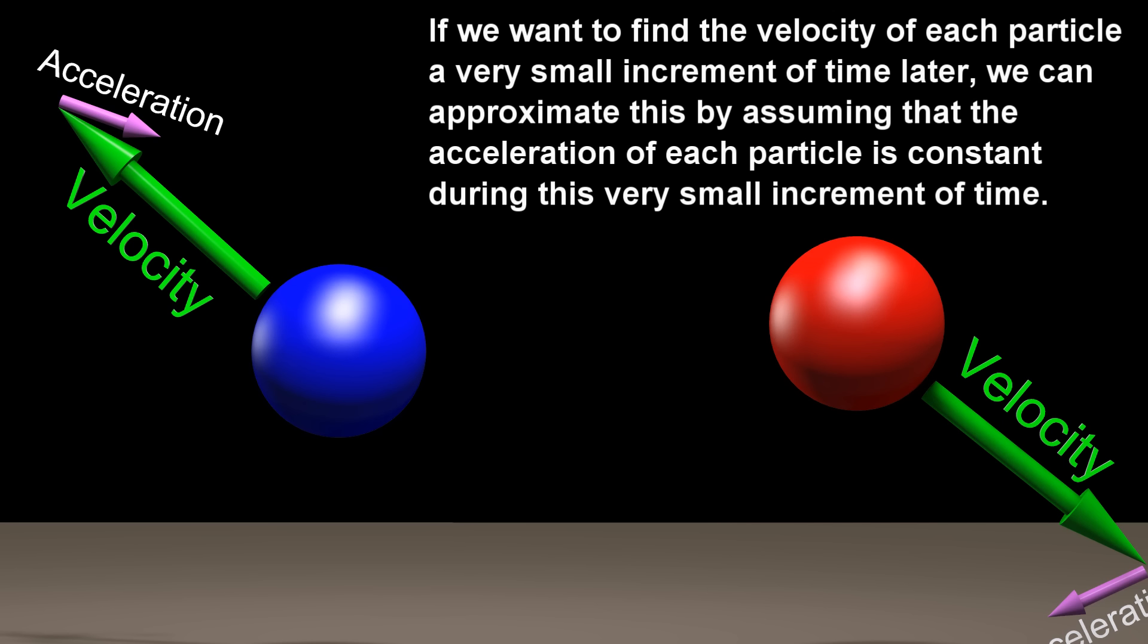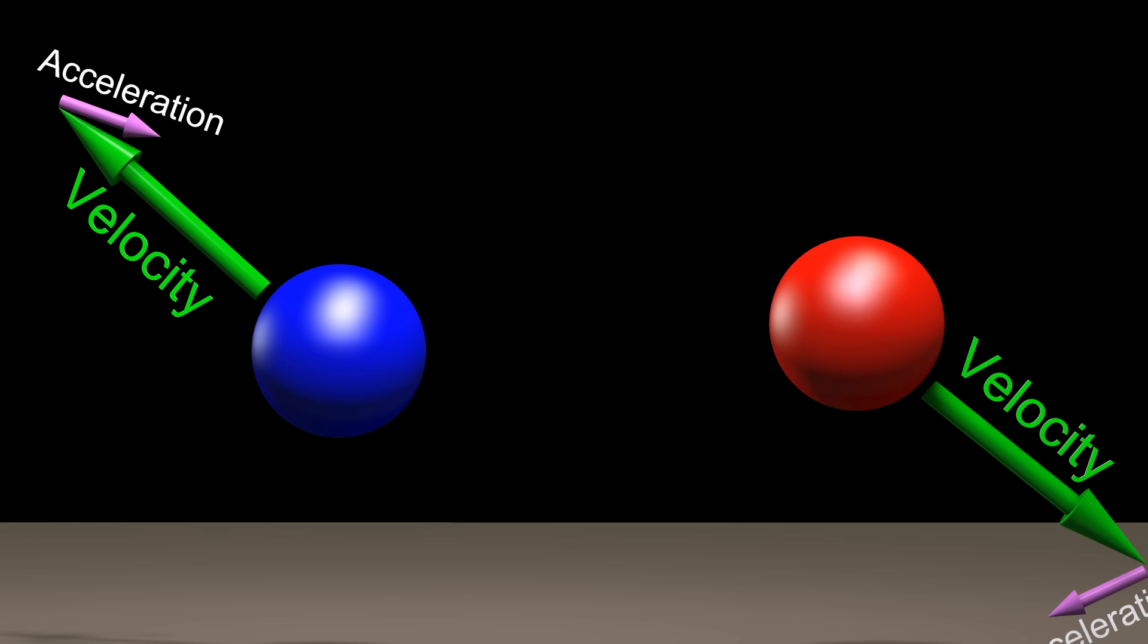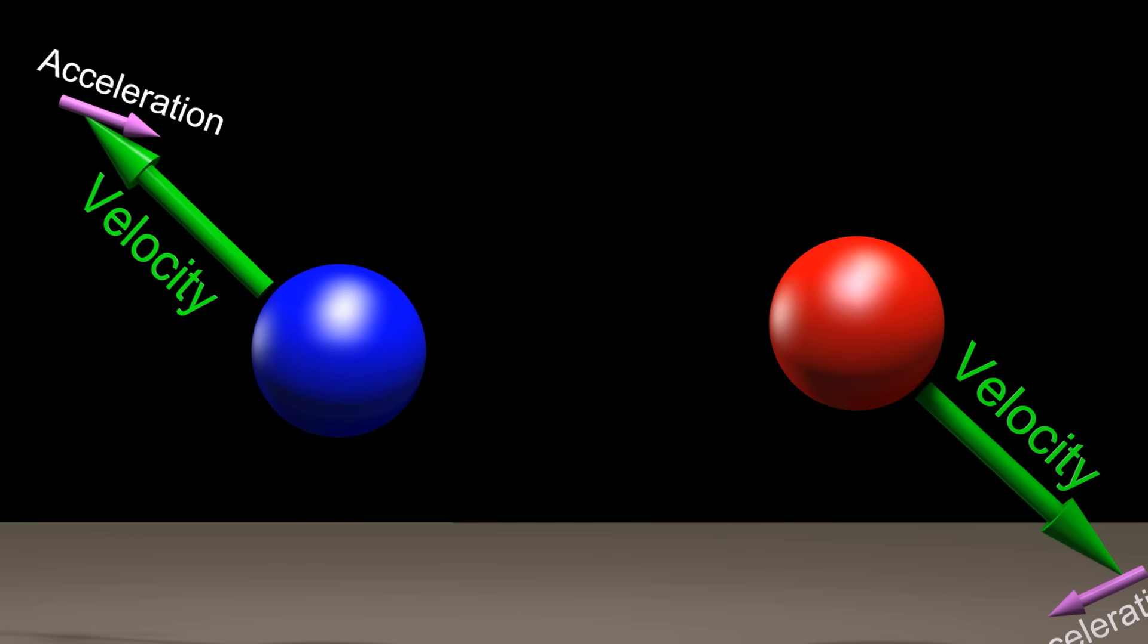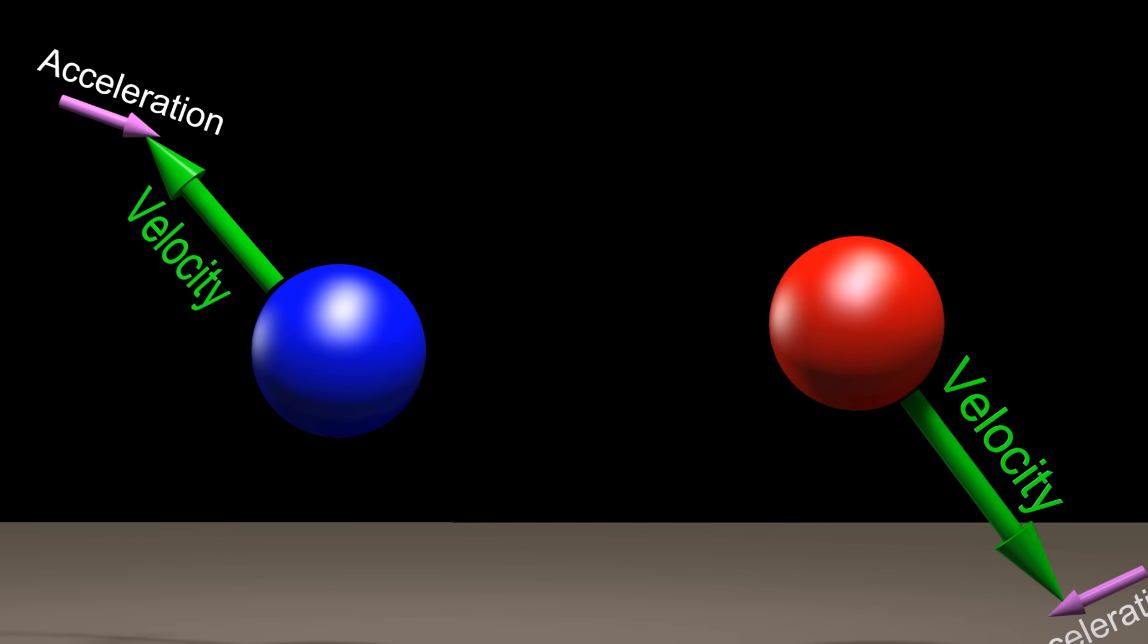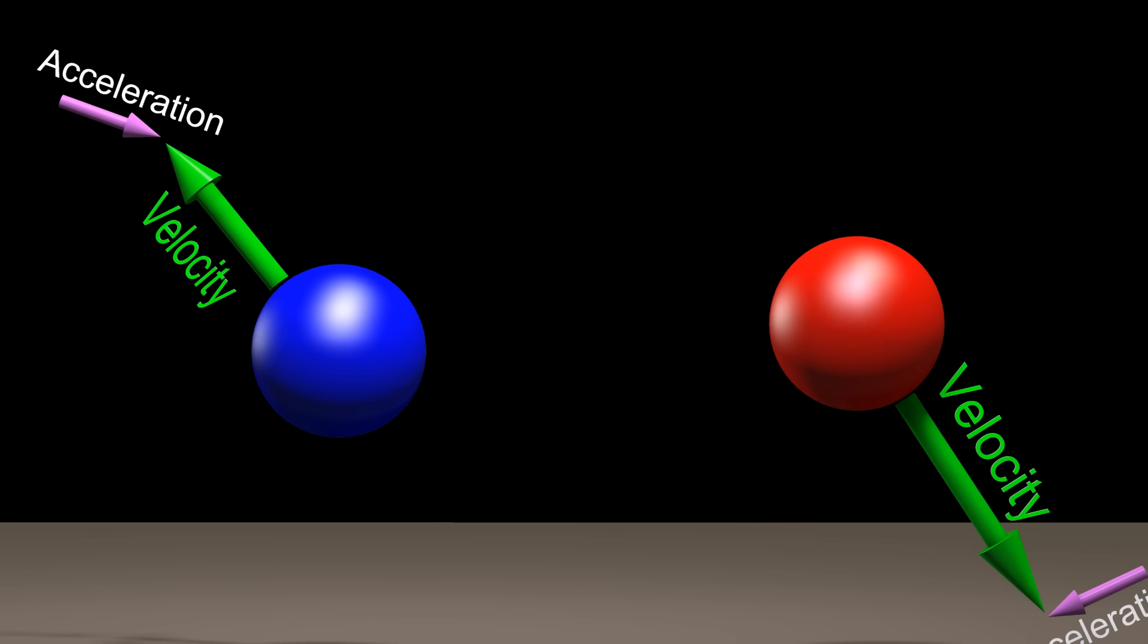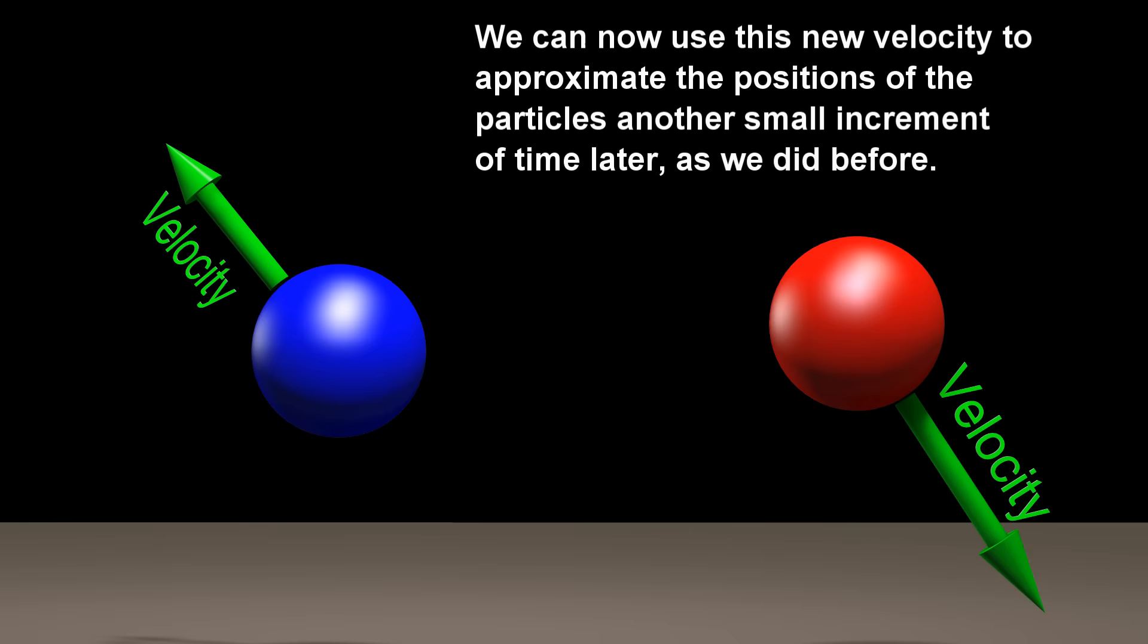If we want to find the velocity of each particle a very small increment of time later, we can approximate this by assuming that the acceleration of each particle is constant during this very small increment of time. We can now use this new velocity to approximate the positions of the particles another small increment of time later, as we did before.